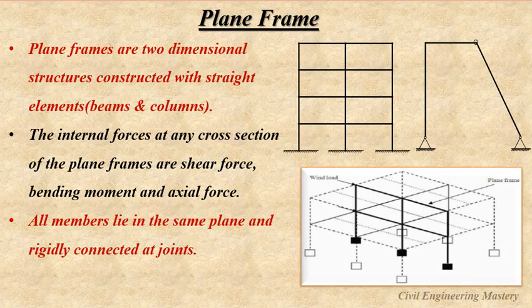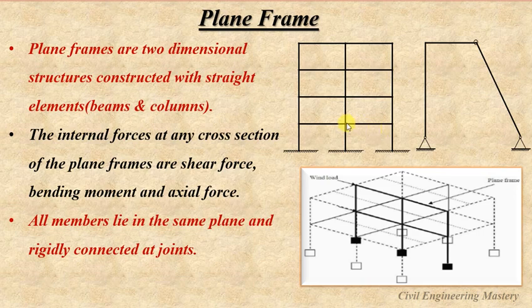Plane frames are two-dimensional structural forms and they are made up of beams and columns. The horizontal members are beams and the vertical members are columns. In a plane frame, all the members lie in the same plane and they are rigidly connected at joints. The internal forces developed in plane frames are bending moment, shear force and axial force.